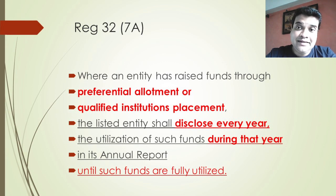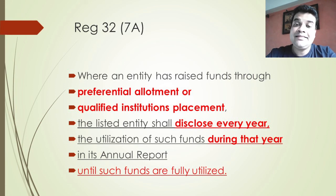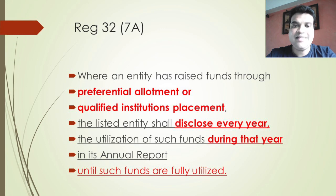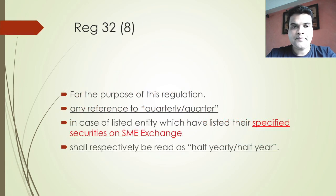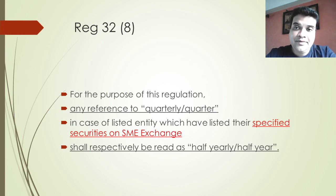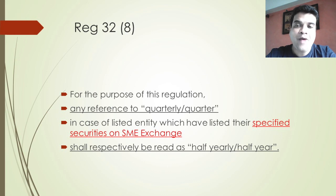Where the listed entity has raised funds through preferential allotment or qualified institution placement, the listed entity shall disclose it every year in its annual report until such period as the funds are fully utilized. When we are talking about securities listed on the SME exchange, the quarterly reference will turn into a half-yearly or half-year reference — that is Regulation 32(8).